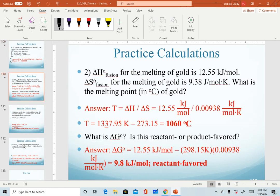The second one is asking for a calculation of the melting point of gold and then a follow-up calculation for the delta G naught value and interpretation.